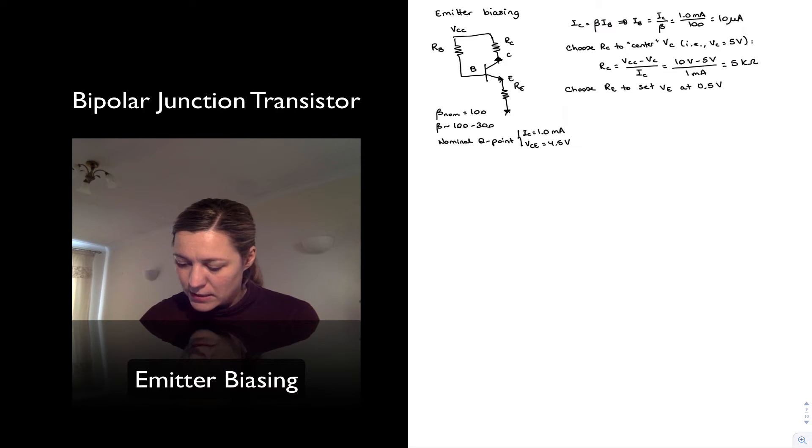And again, this is because VCE is equal to VC minus VE. I want VC to be 5 volts or I just set it to be 5 volts. I want VCE to be 4.5 volts because that's my Q point. So this is just 0.5 volts.